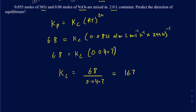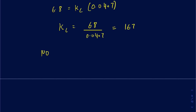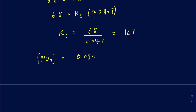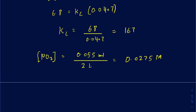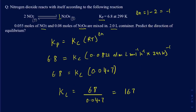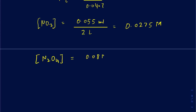So what are the concentrations going to be? The concentration of NO2 is equal to 0.055 moles divided by 2 liters of container. Even though you're given moles, don't take those as your concentrations — you have to find the concentration. So that comes out to be 0.0275 M. And the concentration of N2O4 is 0.08 moles divided by 2 liters, which comes out to 0.04 M.